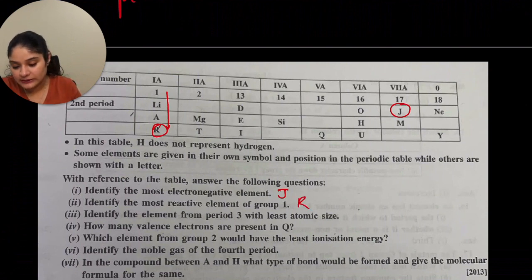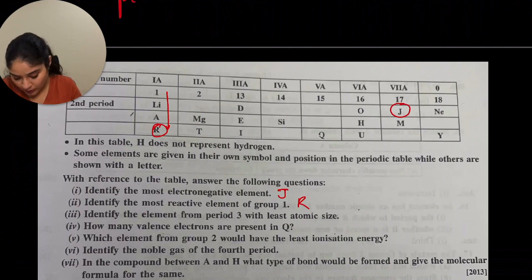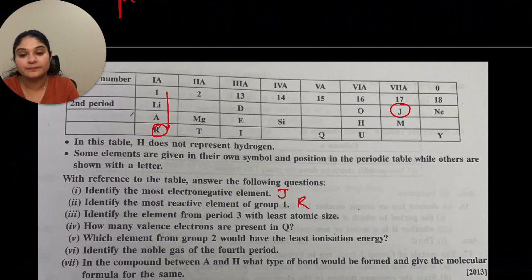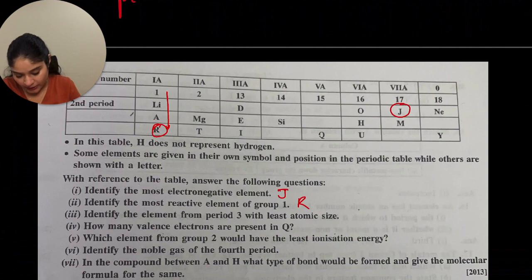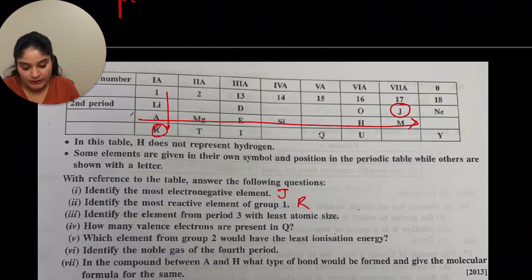Identify the element from period 3 with the least atomic size, and from group 3 with the least atomic size. You are in group 3 — as you go up the group, atomic size decreases. The element with the least atomic size in group 3 is M.